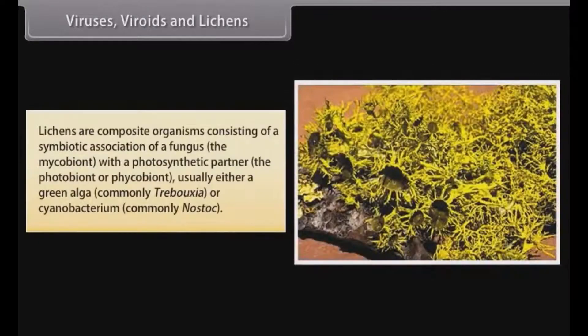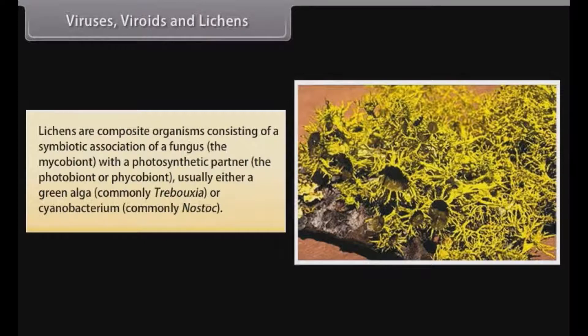Lichens are composite organisms consisting of a symbiotic association of a fungus — the mycobiont — with a photosynthetic partner — the photobiont or phycobiont — usually either a green algae, commonly Trebouxia, or a cyanobacterium, commonly Nostoc.